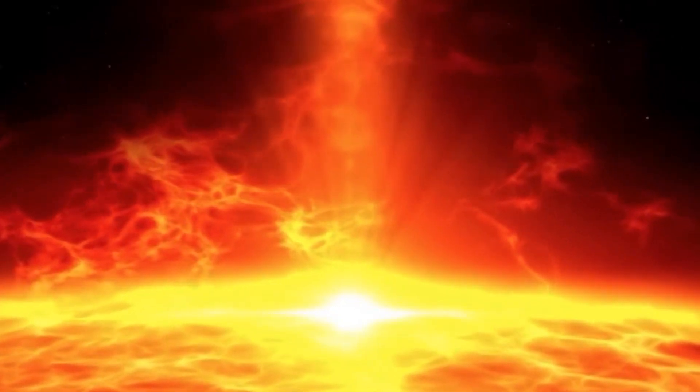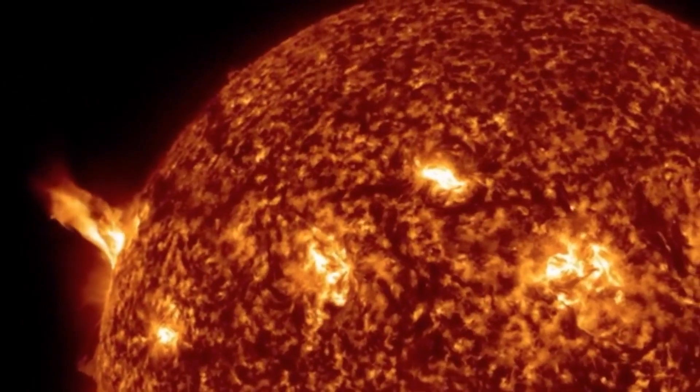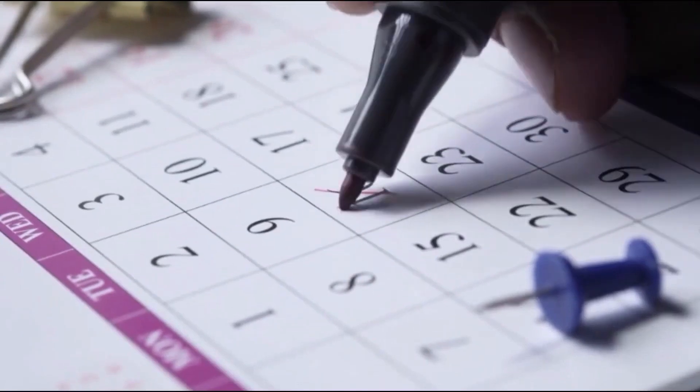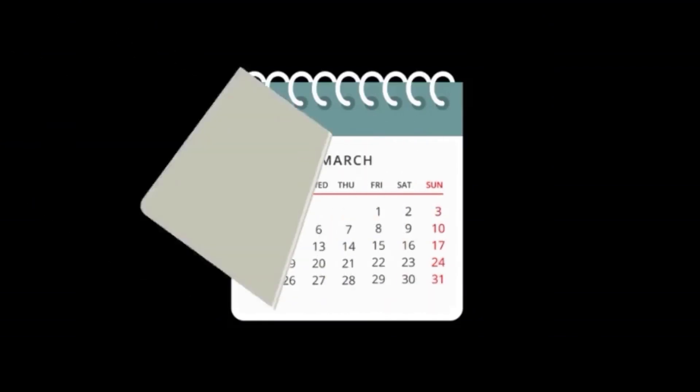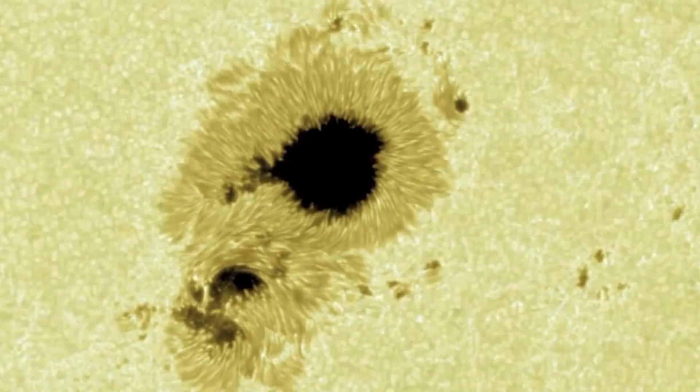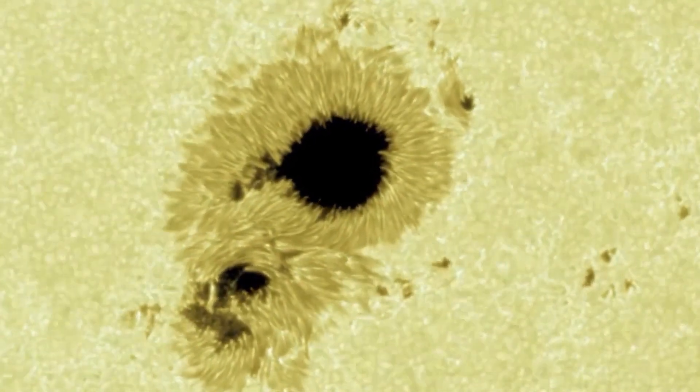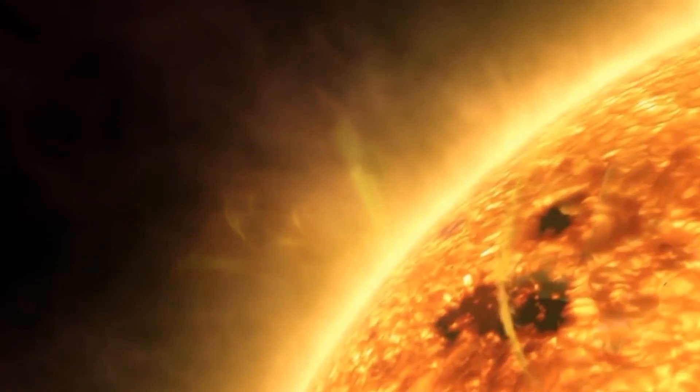The sun's activity cycle consists of two phases. In the first stage, which lasts on average about four years, there is a rapid increase in the number of sunspots. Then, over approximately seven years, their number gradually decreases. During each cycle, other changes also occur. For example, the area where sunspots appear gradually shifts closer to the sun's equator over time.